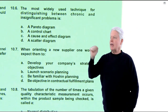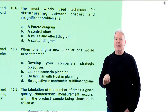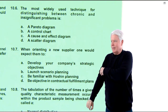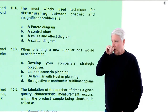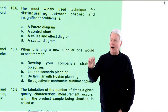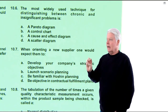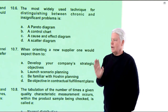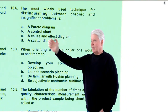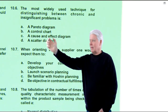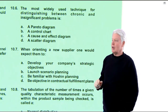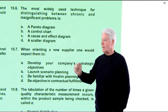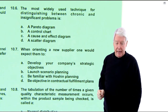Question 10.6: The most widely used technique for distinguishing between chronic and insignificant problems is? I was first thinking SPC — normal cause and special cause — but that's not what they're talking about. They're talking about the Pareto diagram: the 80-20 rule, the significant few and the trivial many. There is a control chart answer here, but after reading it I realized it wasn't about variation. Cause and effect diagram is for root cause. Scatter diagram shows relationship between variables. This one has to be A. 10.6 is A, and it is.